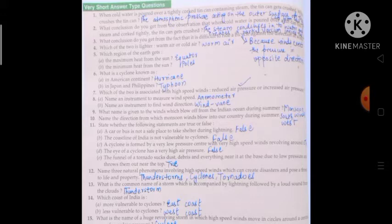Ninth one: what name is given to the winds which blow off from the Indian Ocean during summer? Answer is monsoon winds. Tenth one: name the direction from which monsoon winds blow into our country during summer. Answer is south west.